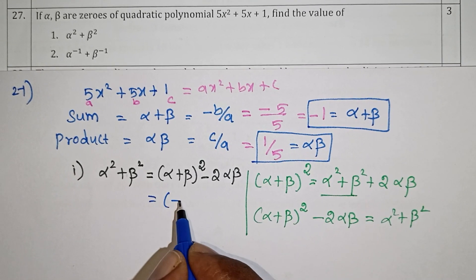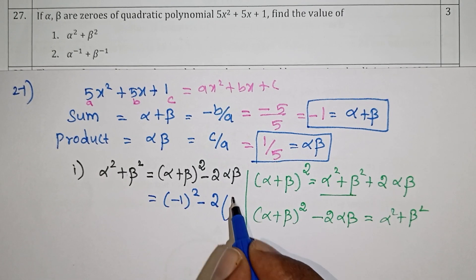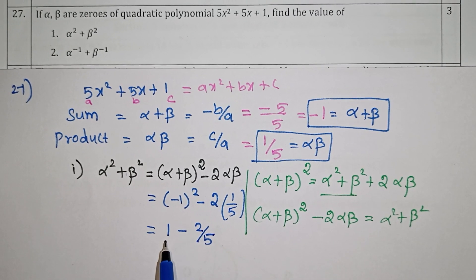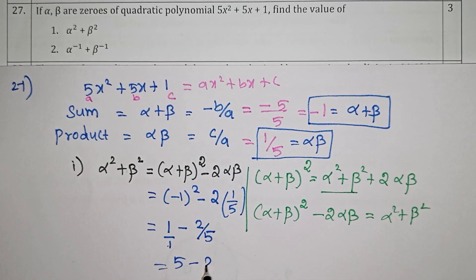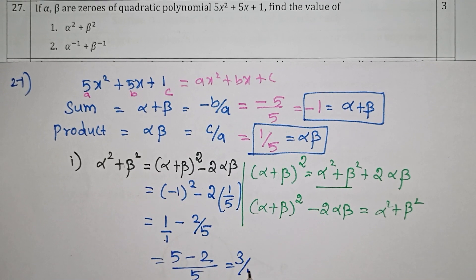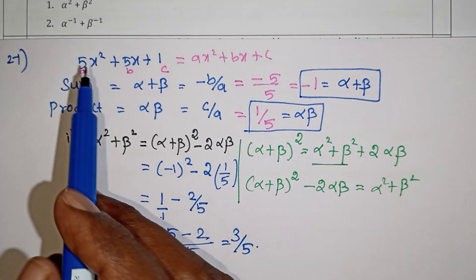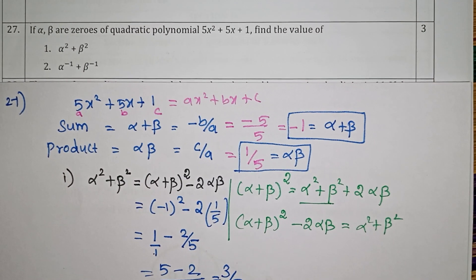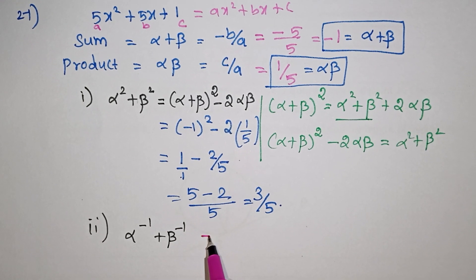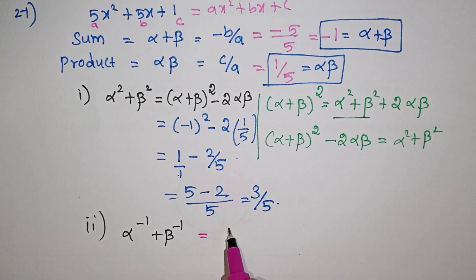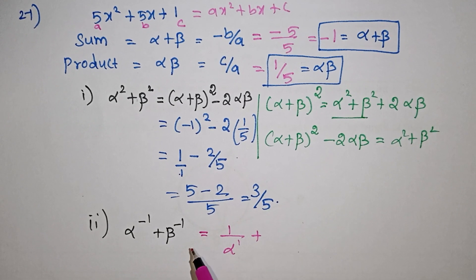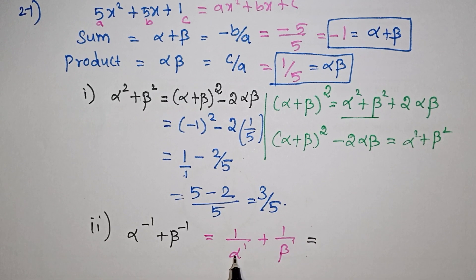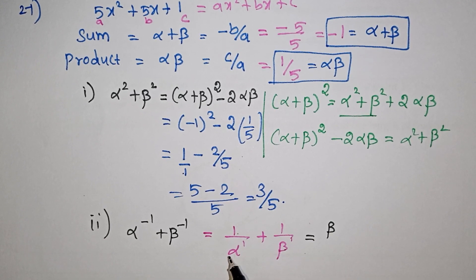Now substituting: alpha + beta = −1 and alpha·beta = 1/5. So alpha² + beta² = (−1)² − 2 × (1/5) = 1 − 2/5 = 3/5. Alpha plus beta minus 1 value is substituted into the basic formula.